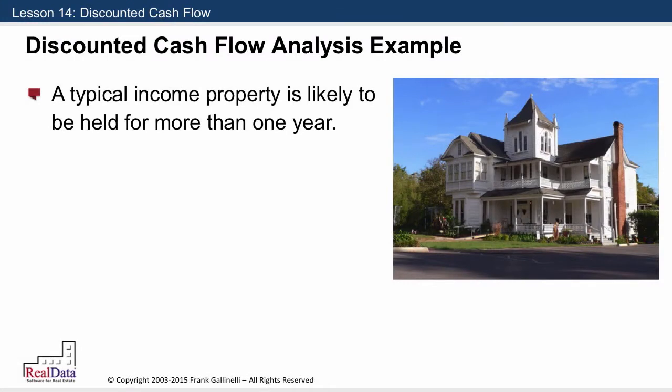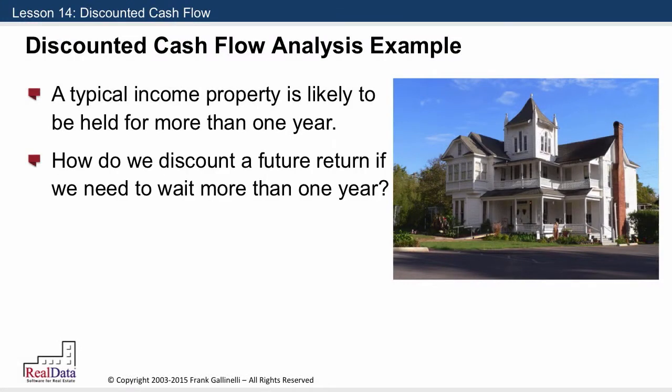Now with a typical income property, you're likely to be holding for longer than a single year. So how do we discount a future return if we feel that we need to wait more than one year to receive it?